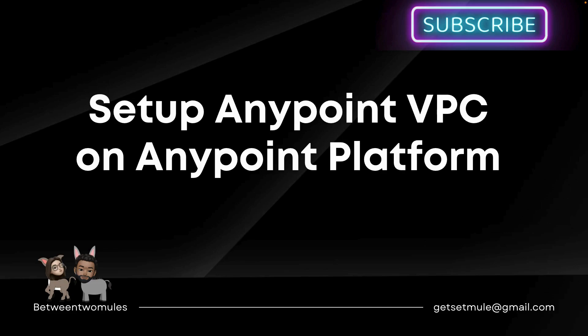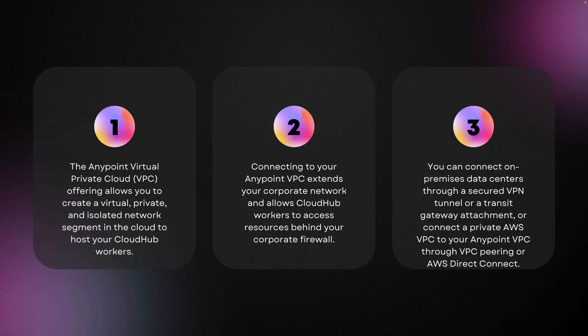We're talking about setting up Anypoint VPC on Anypoint platform. So what is Anypoint VPC? Anypoint VPC, or Anypoint Virtual Private Cloud, allows you to create a virtual, private, and isolated network segment in the cloud to host your CloudHub workers. It is a logically private and isolated network hosted inside of CloudHub. You can connect your private intranet to your Anypoint VPC as if they were all part of a single private network. You can also connect on-prem data centers through a secured VPN tunnel, a transit gateway attachment, or connect a private AWS VPC to your Anypoint VPC through VPC Peering or AWS Direct Connect.